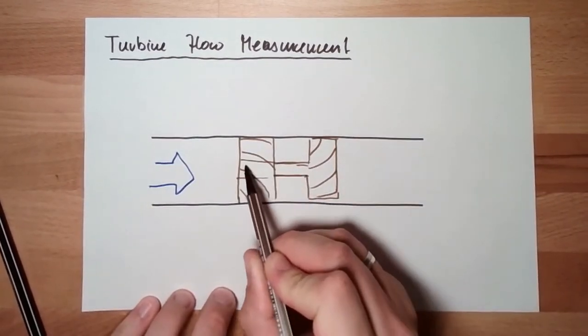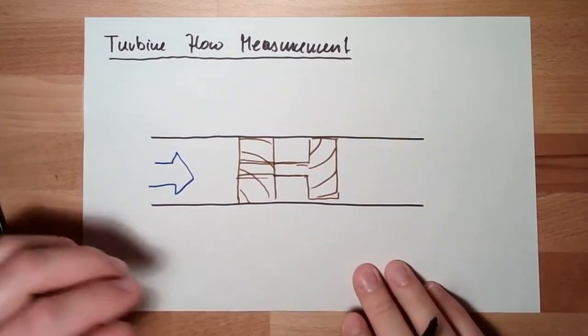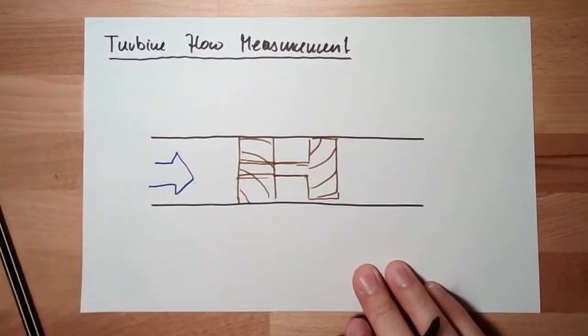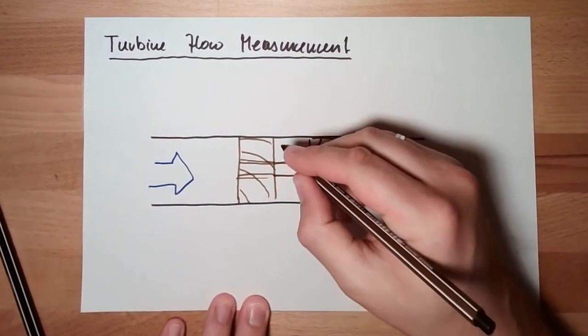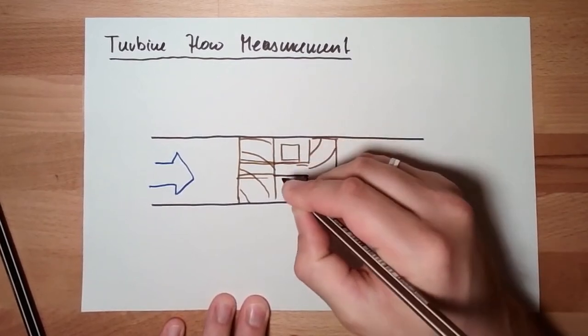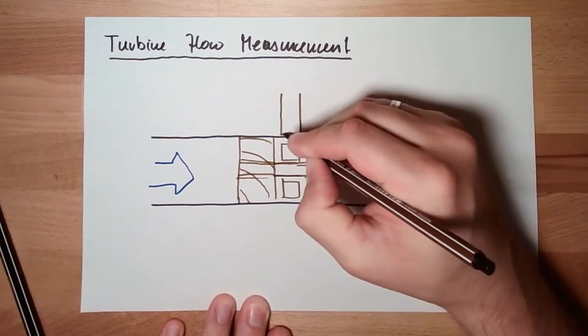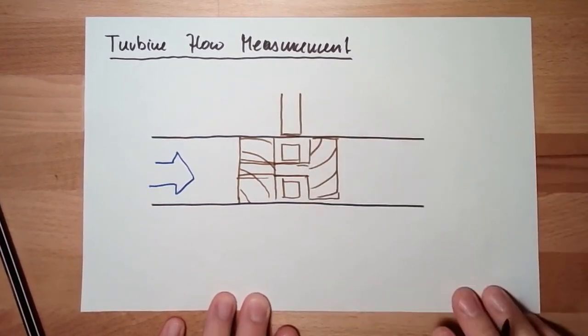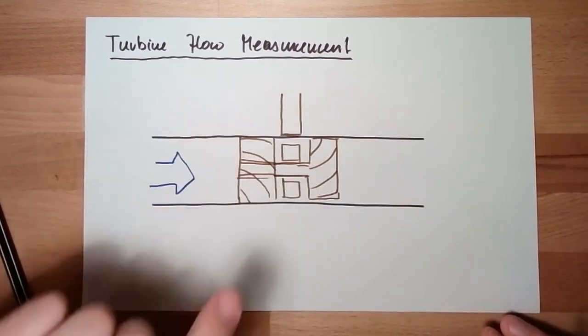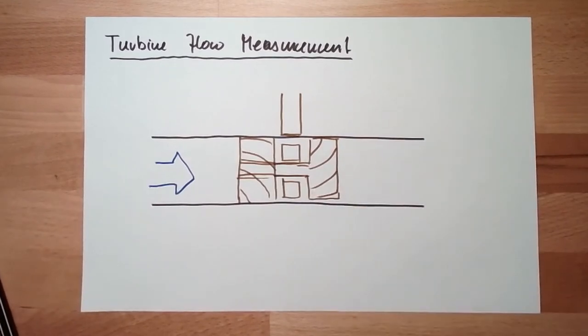This means, the more flow, the more spin will the turbine have. There are little magnets, or something like this, on the spinning shaft. And out there, we can measure, without touching, how many RPM this turbine currently is doing.